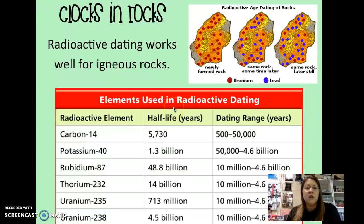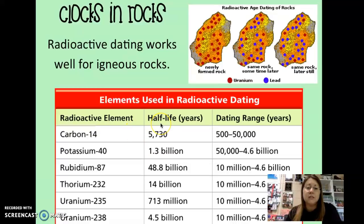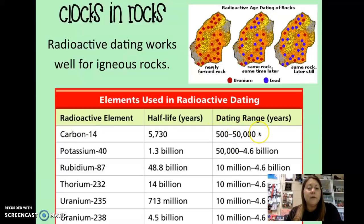The half-life of carbon-14, which is used in dating archaeological materials or artifacts, is 5,730 years. That's how long it takes for 50% of it to remain as carbon-14 and 50% to be the new element it has transitioned and broken down into. Carbon-14 is going to be used for dating materials that are between 500 to 50,000 years old.